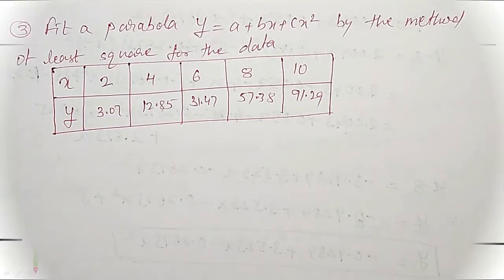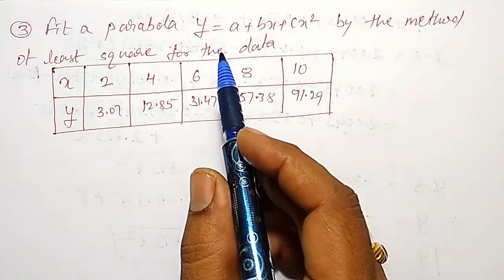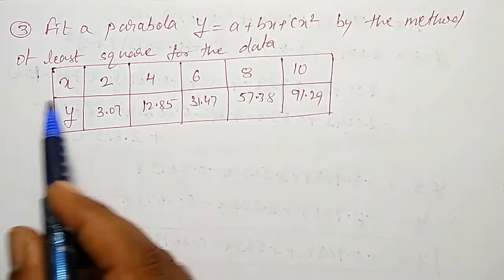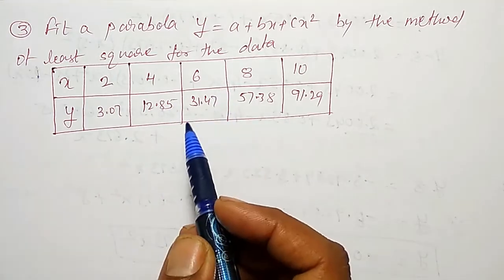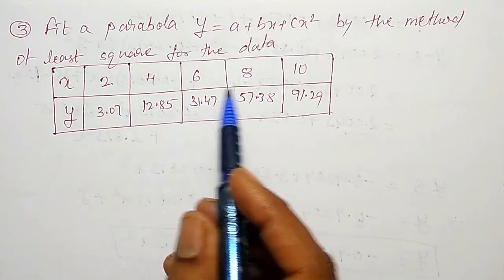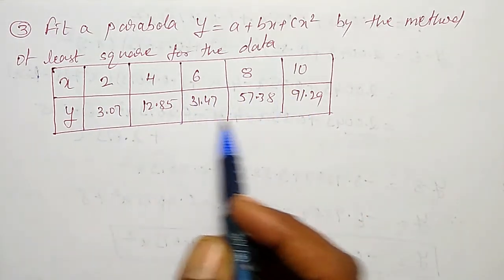In this video, one simple example to fit a parabola y equal to a plus bx plus cx square by the method of least square for the data. The x and y values are given: x values are 2, 4, 6, 8 and 10, corresponding y values also given.